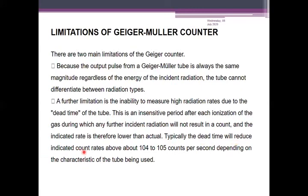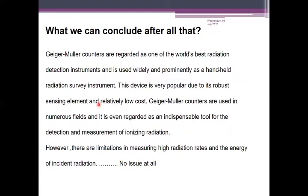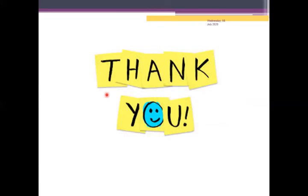In conclusion, Geiger-Müller counters are regarded as one of the best radiation detection instruments and are used widely as handheld radiation survey meters. This device is very popular due to its robust sensing element and relatively low cost. Geiger-Müller counters are used in numerous fields and are regarded as an indispensable tool for the detection and measurement of ionizing radiation. However, there are limitations in measuring high radiation rates and the energy of incident radiation. In the next lecture, we will study about the dose calibrator, which is another type of gas-filled detector for the determination of ionizing radiation counts.